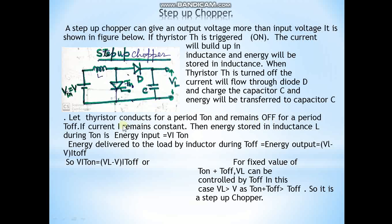When thyristor TH is turned off, current flows through diode D and charges capacitor C, transferring energy to the load. Let the thyristor conduct for a period t_on and remain off for t_off. The energy stored in the inductance equals V · I · t_on, and the energy delivered to the load equals (V_L − V) · I · t_off.